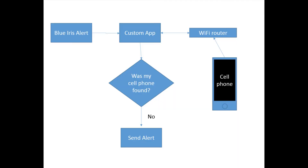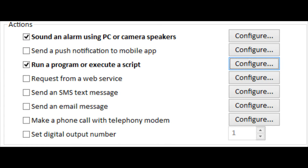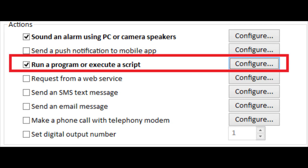Finally, a cell phone detection program for filtering alert emails. This is a custom script that checks your wireless router for your cell phone's MAC address. The idea is if you're at home, you don't want emails being sent to you. But if you're away and your cell phone isn't found on the wireless router, this is accomplished in Blue Iris by executing a script.